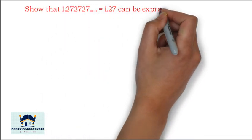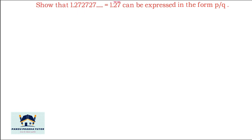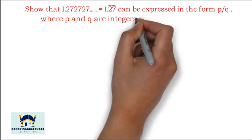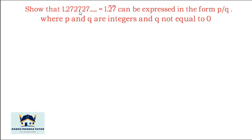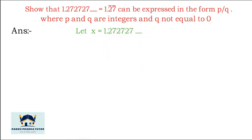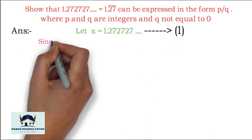Show that 1.27272727... which equals 1.2̄7̄, can be expressed in the form p/q where p and q are integers and q ≠ 0. The recurring part is 27, so the bar is written over 27. Let x = 1.272727... — call this equation 1.